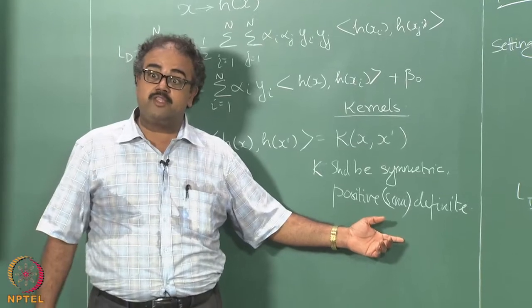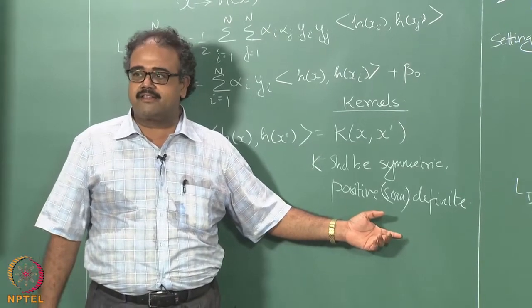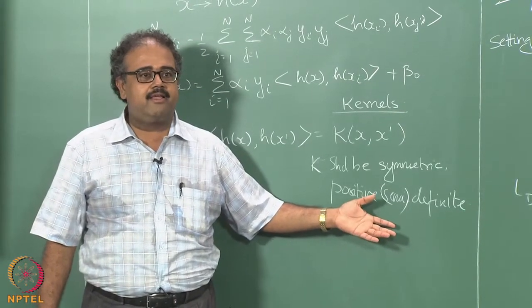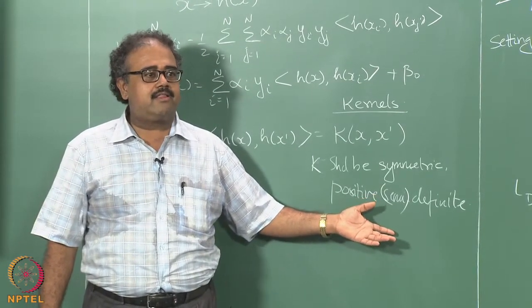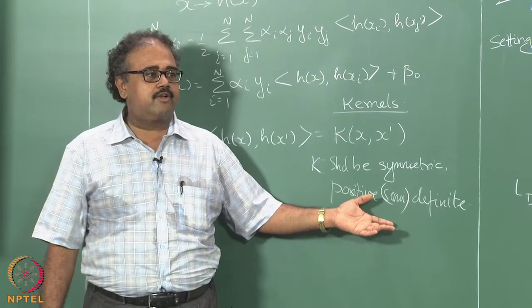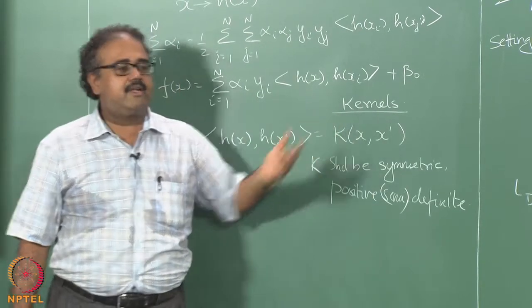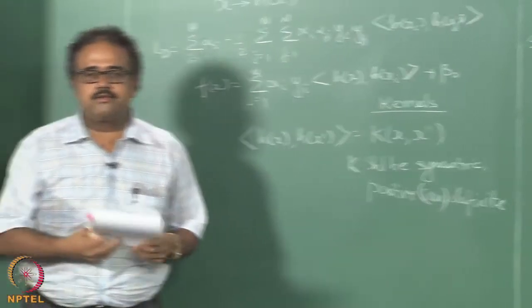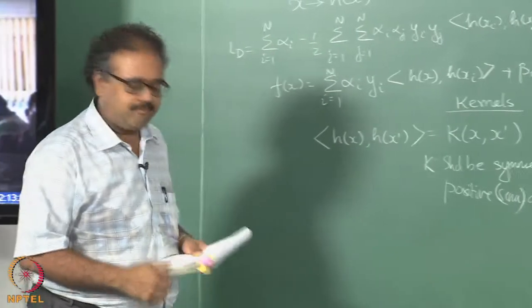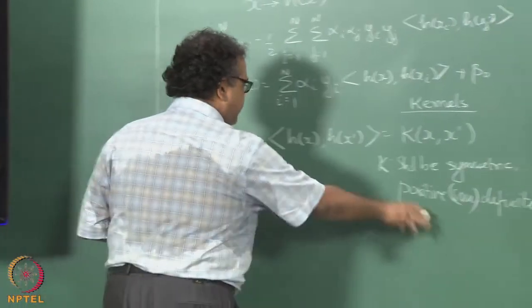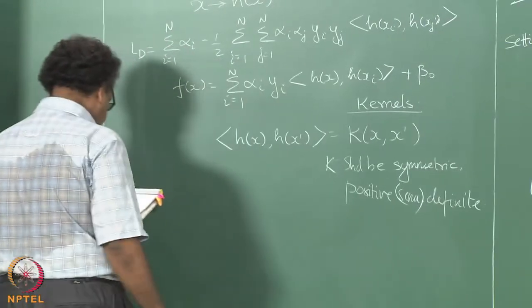That is the mechanistic reason for wanting it to be positive semi-definite. There is a much more fundamental reason which I have not developed the math or intuition for you to understand yet, so it has to come at a later course. Hopefully in the kernel methods course, if you are taking it, you will figure out why that is needed.